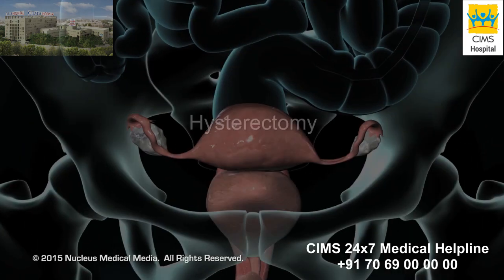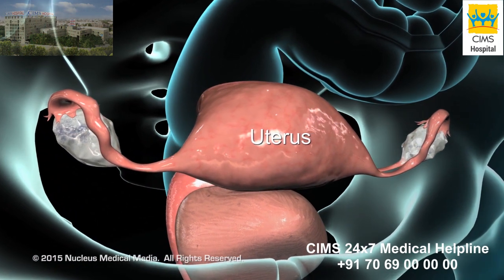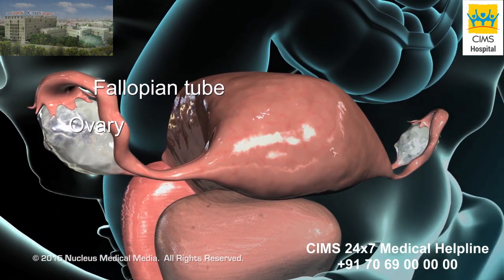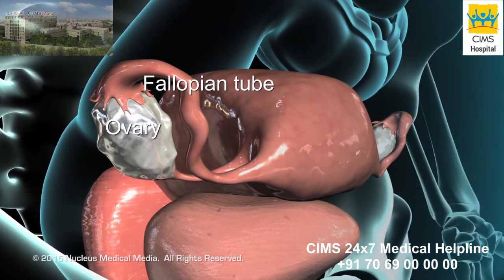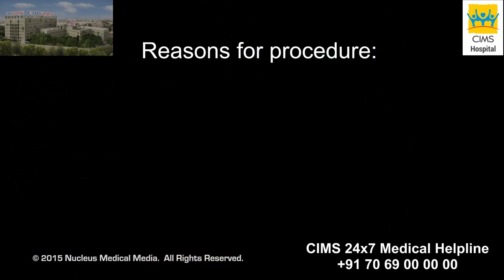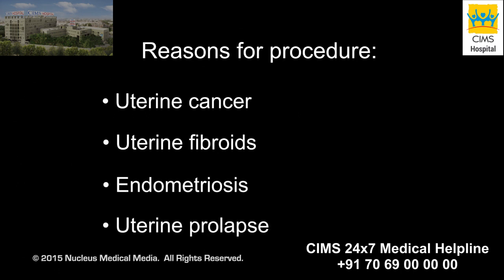A hysterectomy is the surgical removal of the uterus. When the ovaries and fallopian tubes are also removed, this is called a hysterectomy with salpingo-oophorectomy. A hysterectomy is done to treat uterine cancer, uterine fibroids, endometriosis, uterine prolapse, and other gynecological conditions.